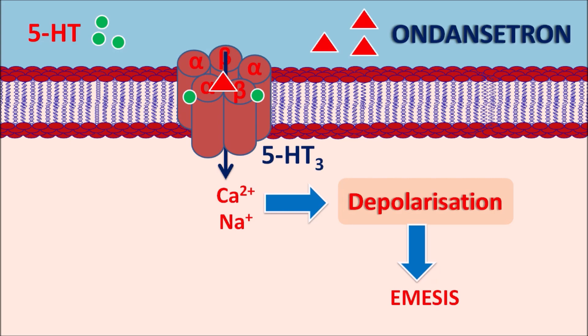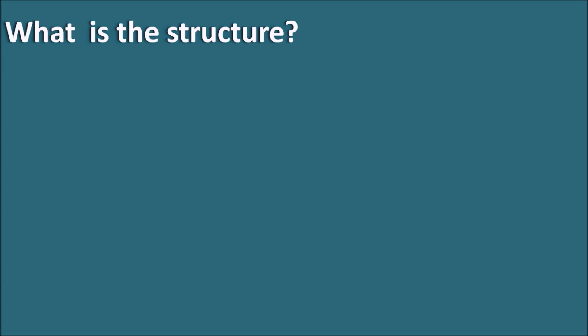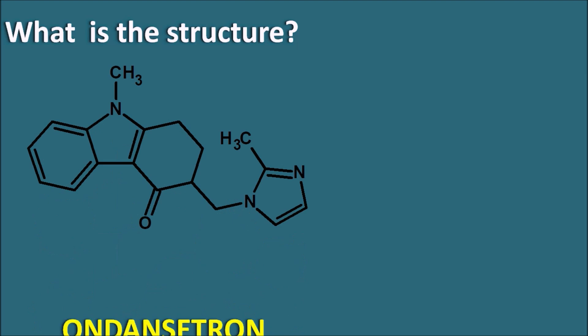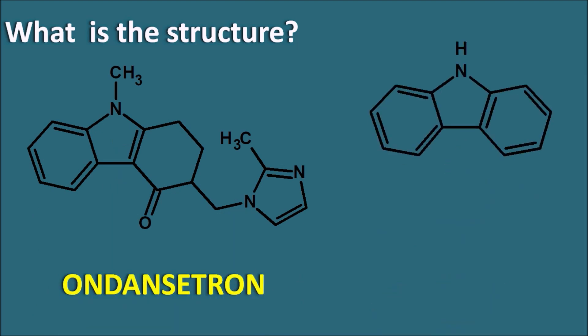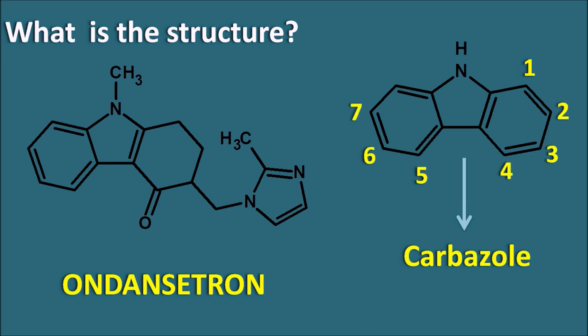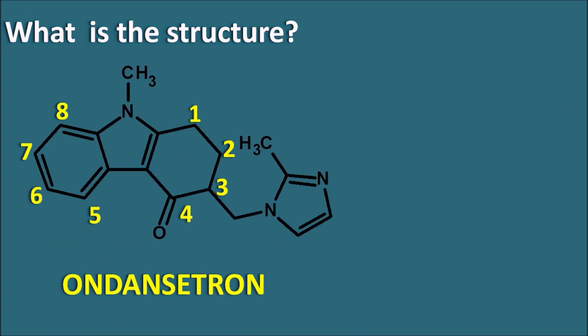Regarding the structure of Ondansetron: the molecule contains a ring system called carbazole. Numbering of the carbazole ring starts from the terminal ring: positions 1 through 9, with the nitrogen at position 9. This carbazole ring system is present in Ondansetron. The carbazole ring has a ketone at the fourth position.